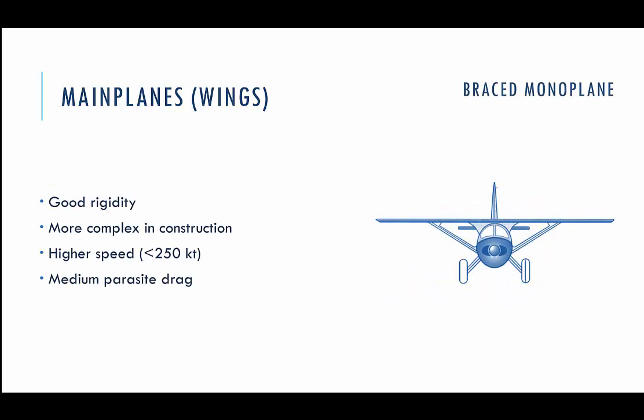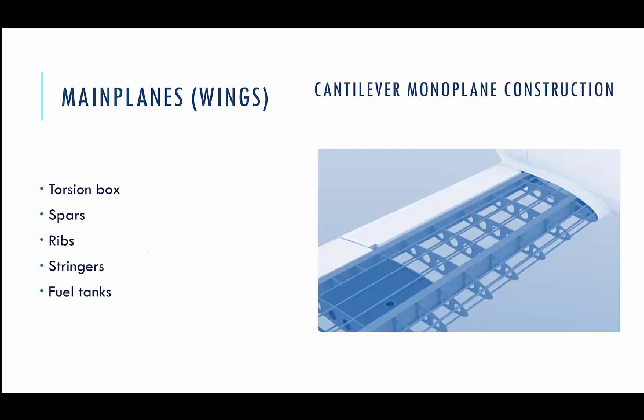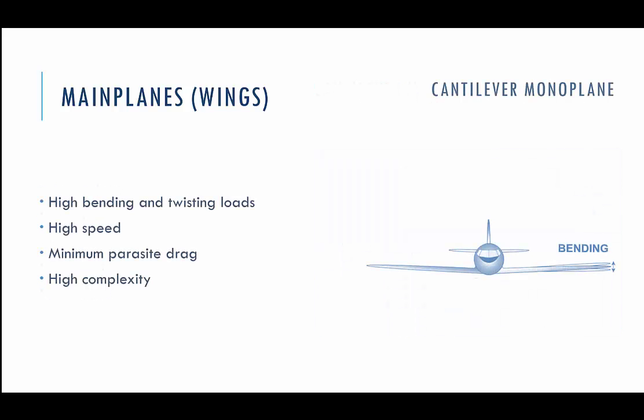A good example of a braced monoplane wing construction is the Cessna 152. This is a classic construction for small airplanes. It has good rigidity because of the braces used to support the wings, and it has much less parasitic drag compared to biplane construction. The braced monoplane has high airspeed limits, averaging up to 250 knots.